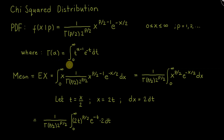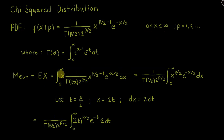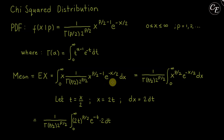Let us derive the mean. The mean equals the expectation of x, which equals the integral from 0 to infinity of x times the probability density function dx. We can move out the constant from integration, and combine both x terms: x^(p/2 − 1) times x gives x^(p/2), so we have the integral of x^(p/2) · e^(−x/2) dx from 0 to infinity.